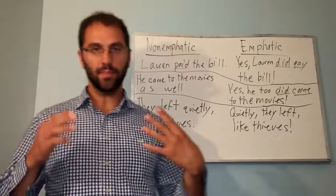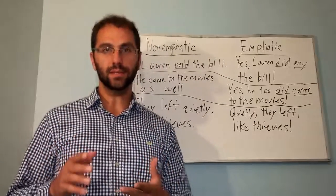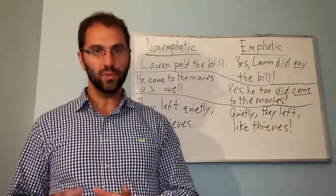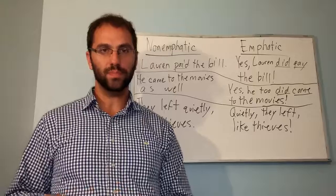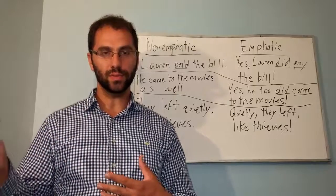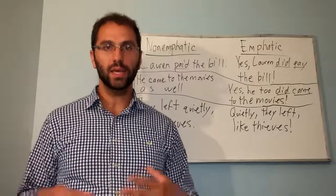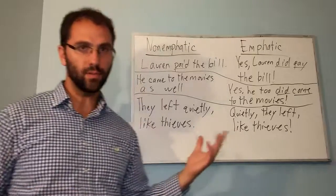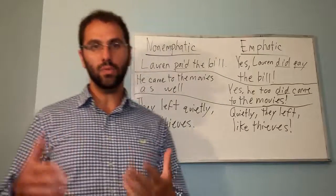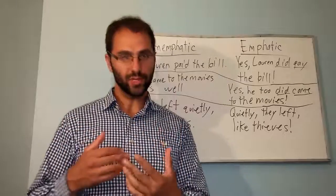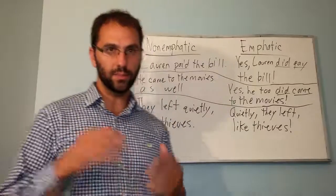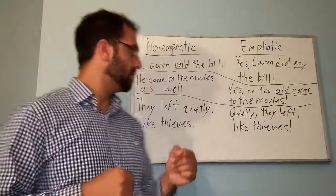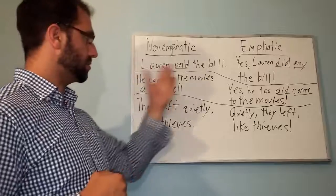One way to set up an emphatic sentence is to use the verb 'to do' in its proper form and also use the main verb in its infinitive. Otherwise, we could rearrange the sentence to put more emphasis at the beginning of the sentence.